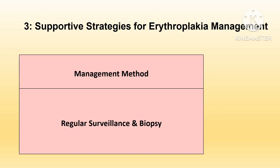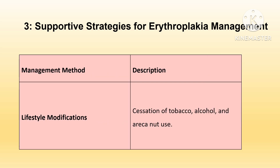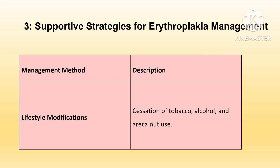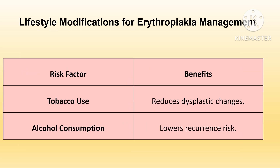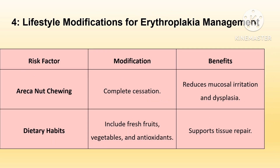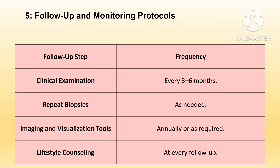Supportive strategies help in overall management and follow-up to prevent recurrence and manage risk factors, ensuring the lesion has been fully treated and any recurrence is caught at an early, treatable stage. Lifestyle changes such as cessation of tobacco, alcohol, and areca nut use should be advised to remove risk factors contributing to lesion recurrence or malignant transformation. Through regular follow-ups, recurrence can be detected early and appropriate interventions made to prevent progression to cancer.